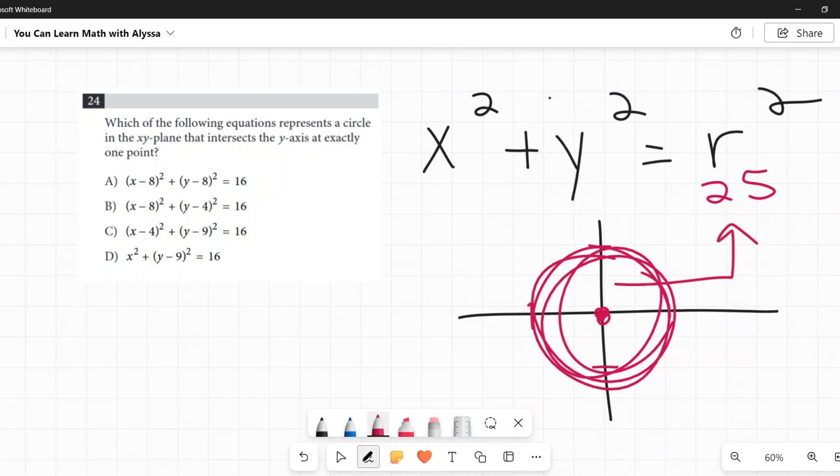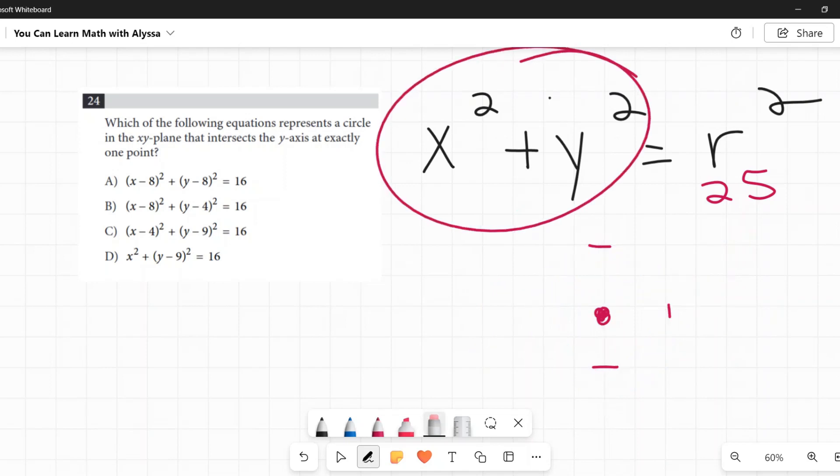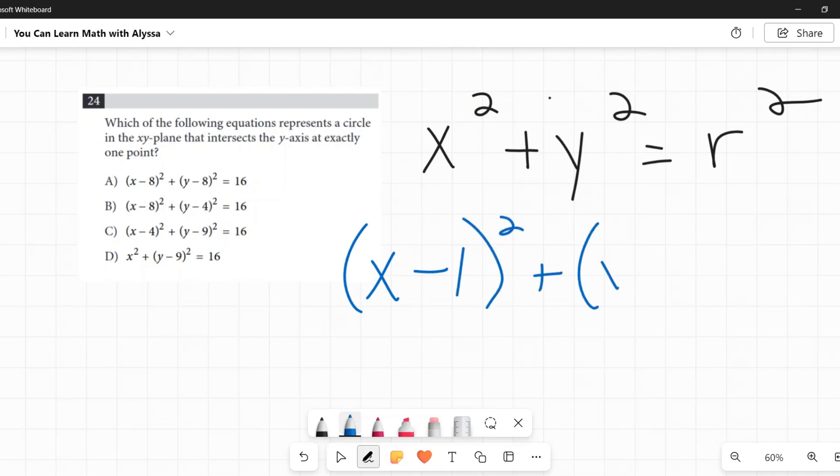If you want this circle to move anywhere, you have to start adding and subtracting from the x squared and the y squared. And it's always going to move it in the opposite direction.